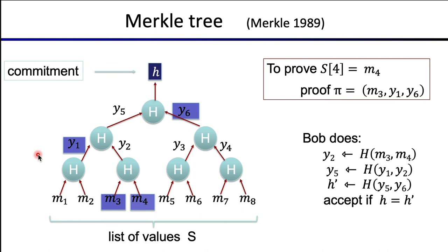How does Bob verify the proof? He follows the path upward. He takes the claimed m4 along with m3 from the proof and hashes those together to get a candidate y2. Then he hashes y2 along with y1 from the proof to get a candidate y5. He takes y5 and hashes it with y6 from the proof to get a candidate h prime for the Merkle output. Then he checks if h equals h prime — if so, he accepts; otherwise, he rejects. Not only does the proof contain only log n hash values, Bob can verify it by computing only log n hashes.